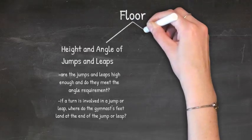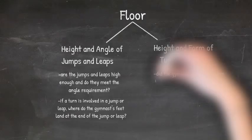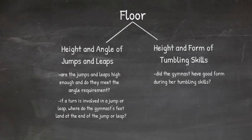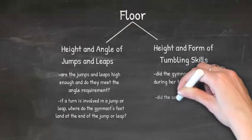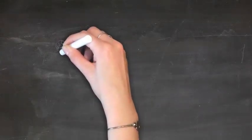The other thing judges look for on floor is the height and form of tumbling skills. Form is huge on floor: in the air while tumbling, are the legs together, legs straight, arms straight, feet pointed? Judges also evaluate the height of the tumbling skills — how high the gymnast gets off the floor during her saltos and tumbling passes — and of course they look at how she comes down and how her landing is.